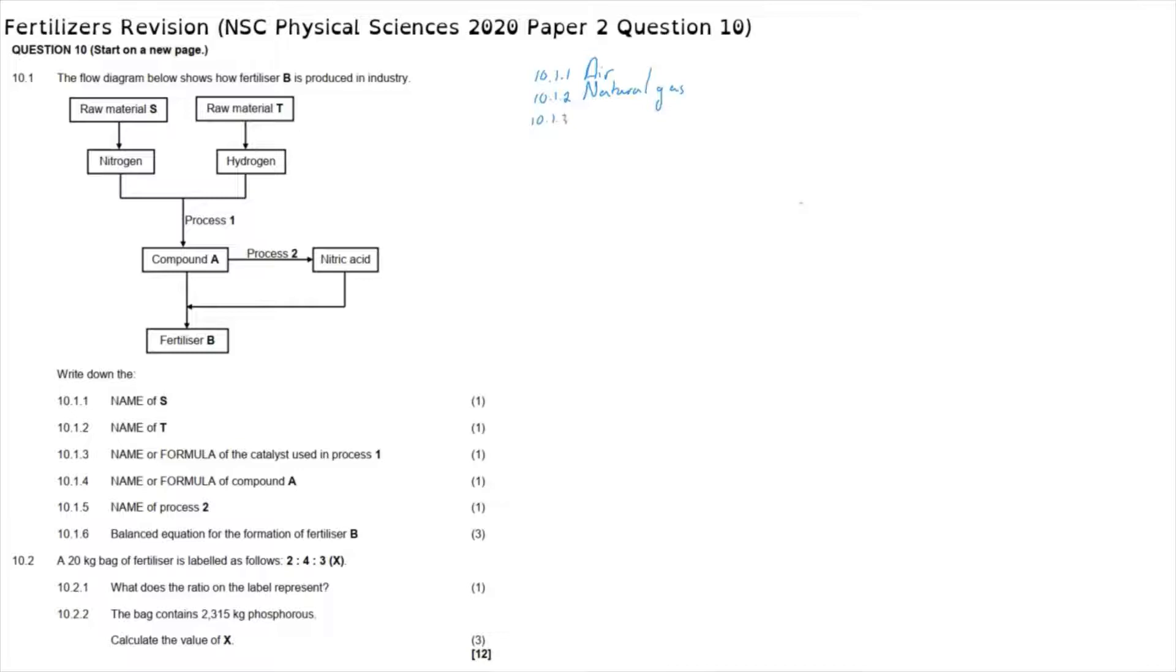Question 10.1.3: the name or the formula of the catalyst used in process 1. Process 1 is the process whereby nitrogen and hydrogen are combined, which we know is going to form ammonia NH3, which means that process 1 is the Haber process. The Haber process requires an iron or an iron oxide catalyst in order for that combination of nitrogen and hydrogen to occur. So our catalyst is either iron or iron oxide.